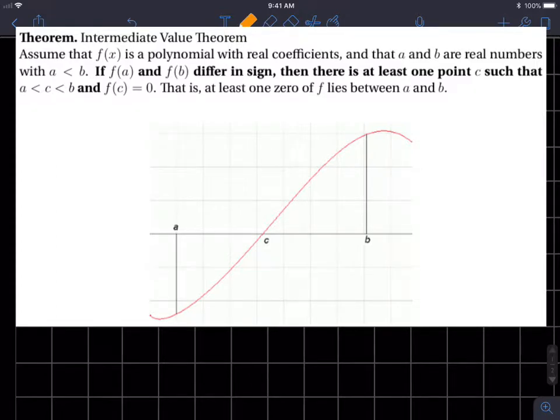So the topic is intermediate value theorem. Assume that f of x is a polynomial with real coefficients and that a and b are real numbers. So let's say that a is equal to 7 halves and b is equal to 8. With a less than b, and a is 7 halves, that's 3 and a half, and b is 8, so a is certainly less than b.